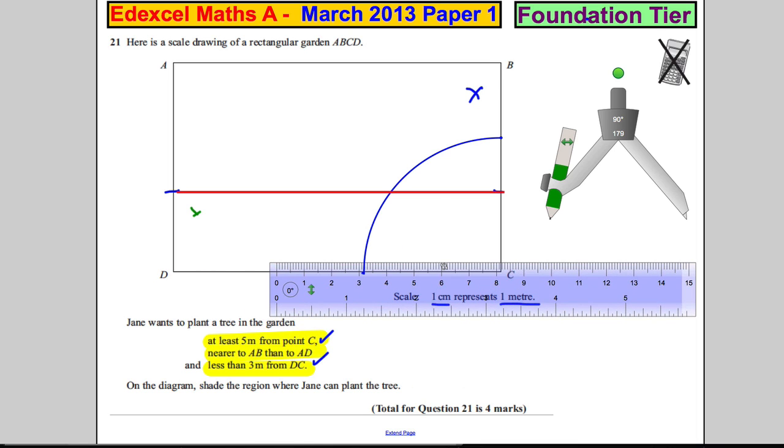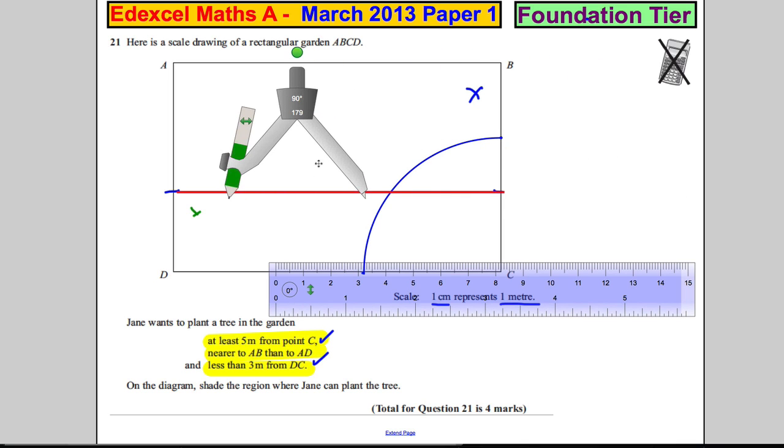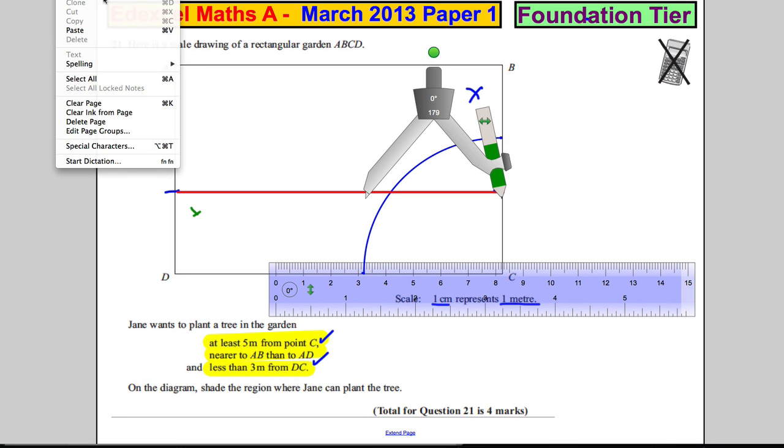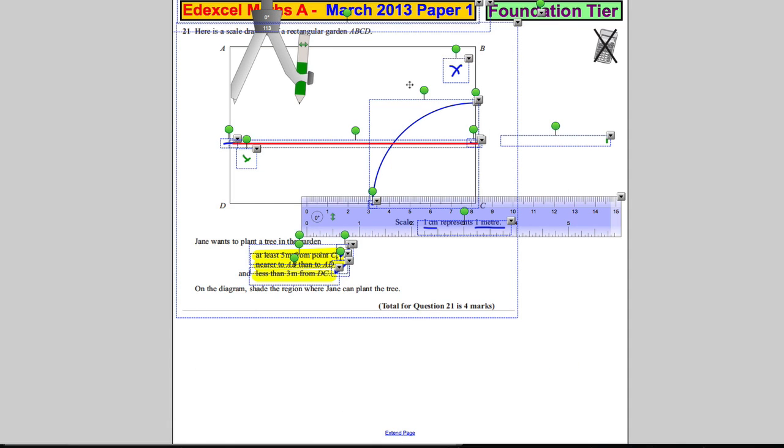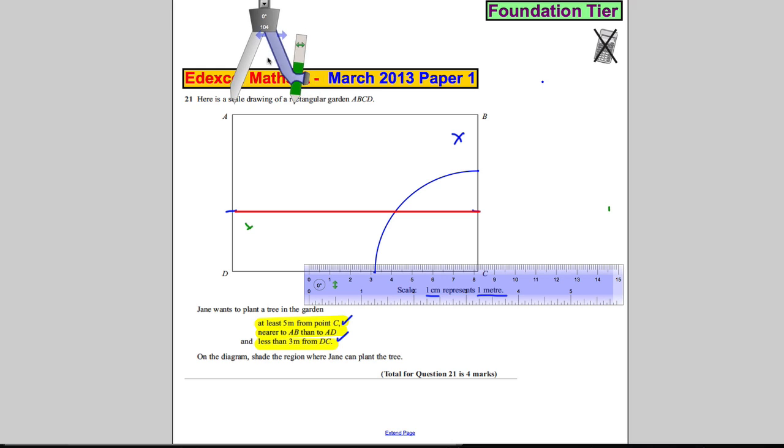And the last one, the middle one: nearer to AB than AD. So AB and AD, there you want the line that cuts these two in half. It's called the perpendicular—no, it's called the angle bisector. So what you want to do—I'm just going to take this to one side one second. Sorry, I'm going to move that in a bit. To work out the angle bisector, I'm going to actually have to move this down because it's not working out properly for me here.